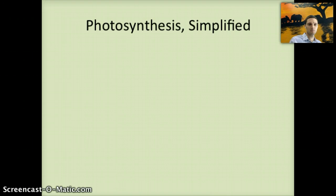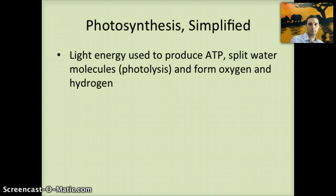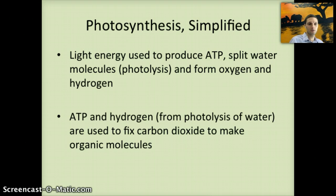To simplify the process of photosynthesis: light energy is used to produce ATP, a small amount — not as much as in cellular respiration under aerobic conditions. That light energy is then used to split water molecules in a process called photolysis, forming oxygen and hydrogen. The ATP and hydrogen are then used to fix carbon dioxide to make organic molecules, which is an endothermic reaction requiring energy obtained by absorbing sunlight.